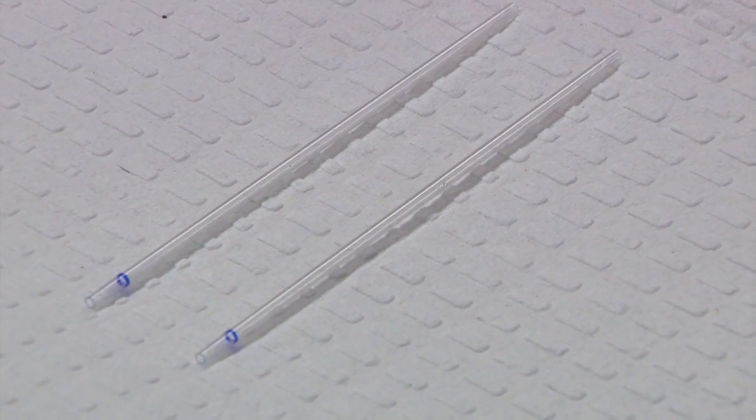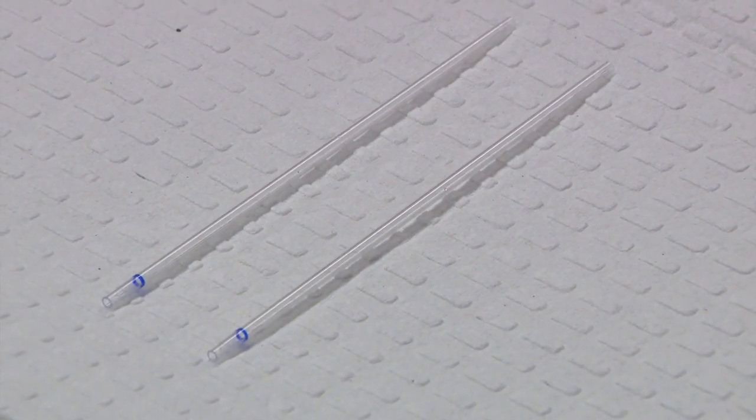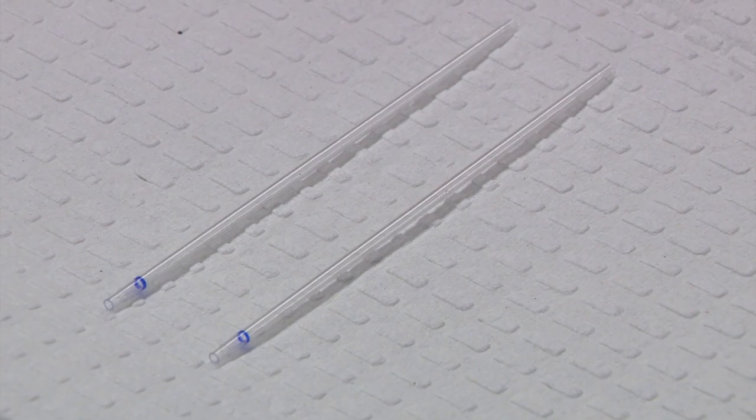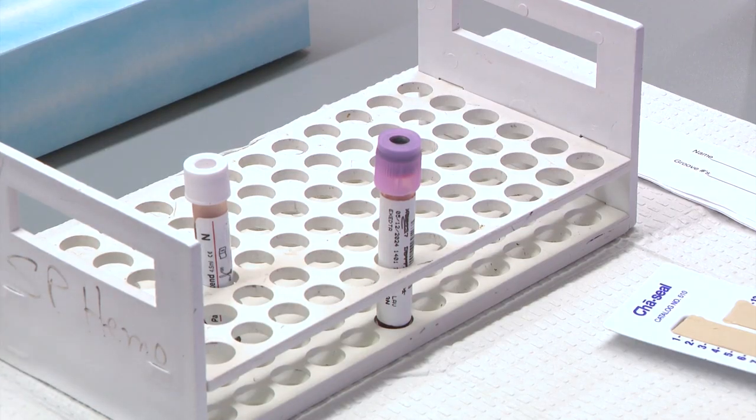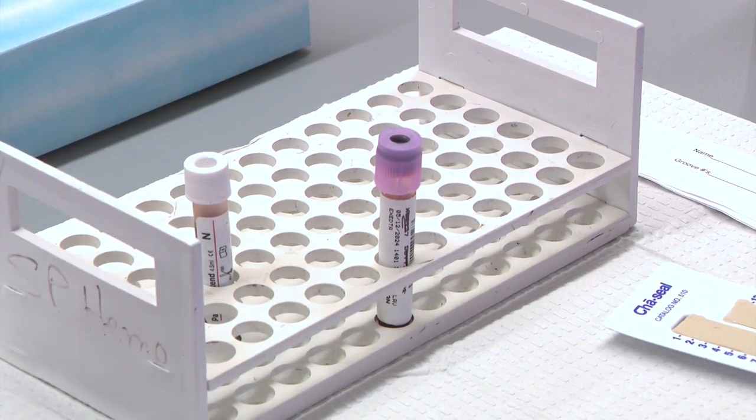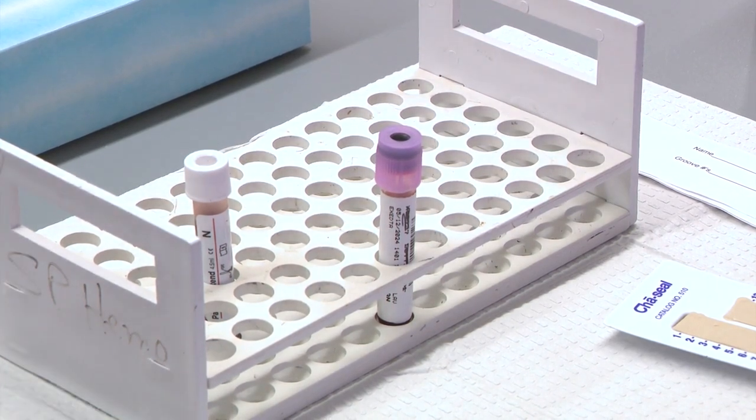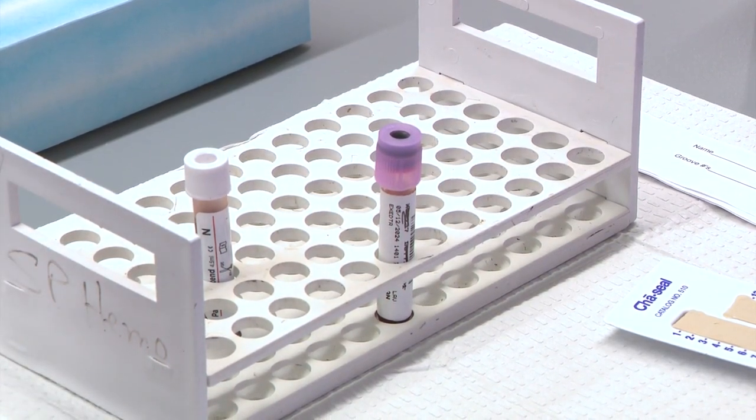The test is performed in duplicate, so two micro hematocrit tubes will be filled two-thirds full for each sample. We will begin by preparing the patient sample. While preparing the patient sample, make sure your control is set out so it can warm to room temperature.